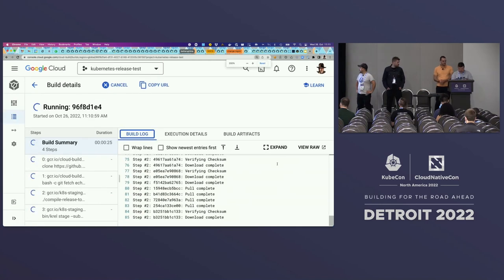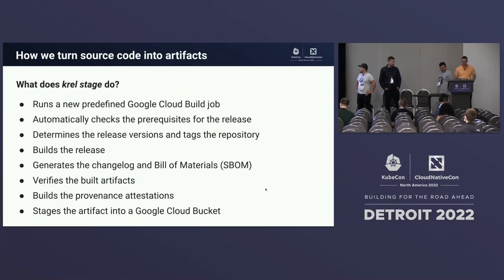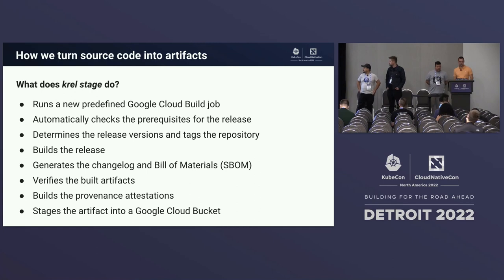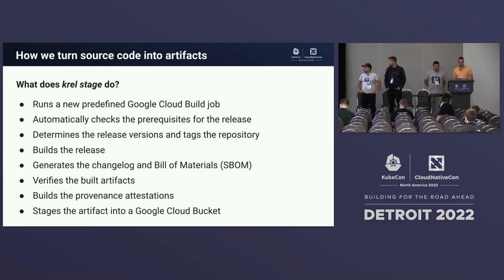Here's an overview of what `krel stage` actually does. It runs a predefined Google Cloud Build job and checks prerequisites for the actual release — for example, determining the release version and the tag in the repository. Then it builds the release, creating binary artifacts and container images. It also generates the bill of materials, which is fairly new. Then it verifies those build artifacts — for example, double-checking that the architecture has been set correctly — and builds a provenance attestation for this build step. After that, everything built is staged into a Google Cloud Build bucket.